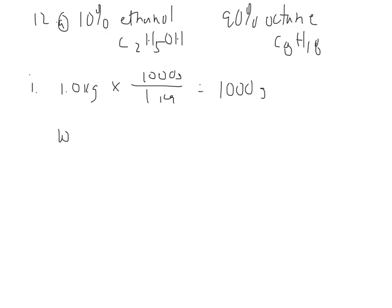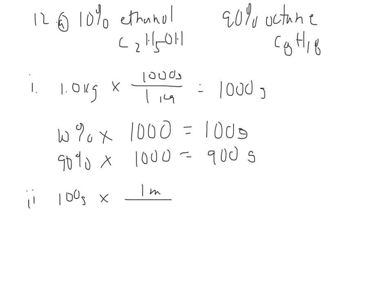So 12A, part I, they want to know in one kilogram of fuel, what's the mass in grams of ethanol and then B and octane, both. So one kilogram is really just 1,000 grams. So then my ethanol is going to be 10% times that 1,000 or 100 grams. And my octane is going to be the 90% times 1,000 or 900 grams. And that adds back up to 1,000, so that's good. And then part two of that, they want to know how many moles that is. Well, the 100 grams of ethanol has a molar mass of 46.08, so that's 2.17 moles of ethanol. And then the 900 grams of octane has a molar mass of 114.20, so this is 7.88 moles.